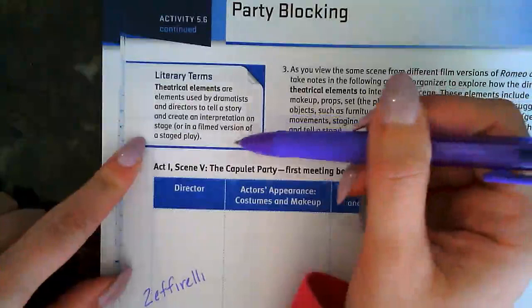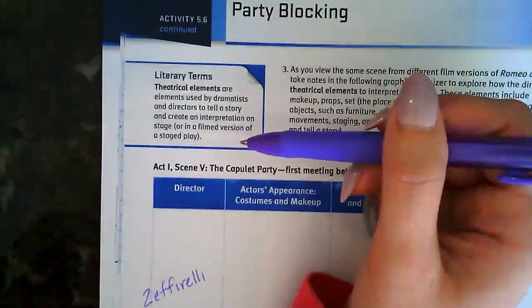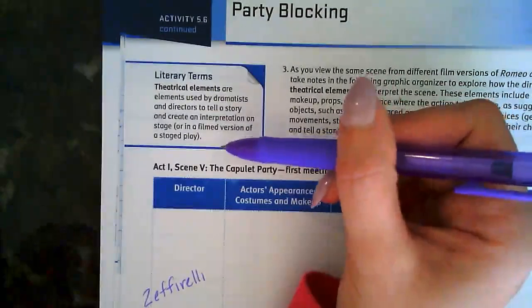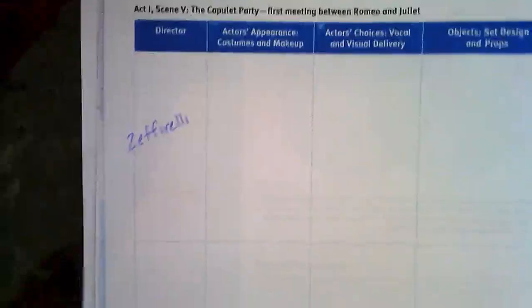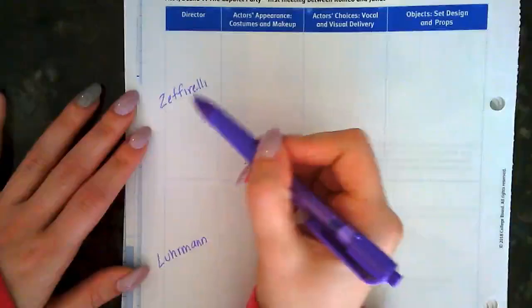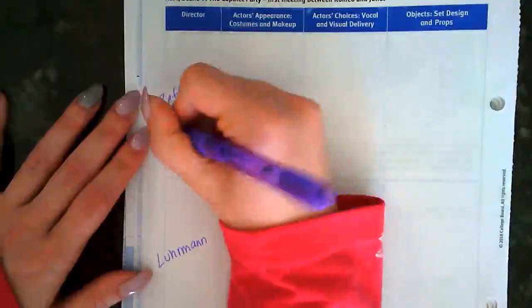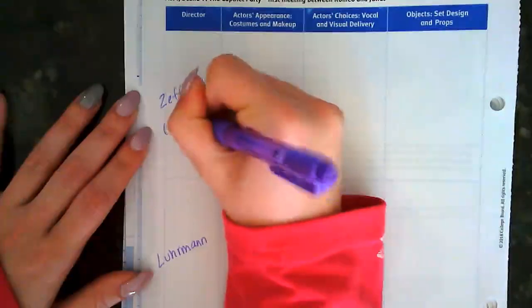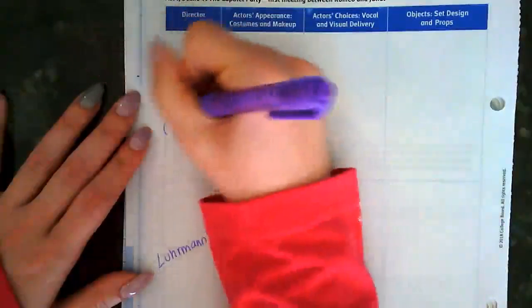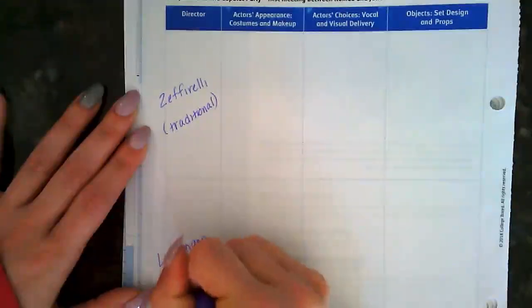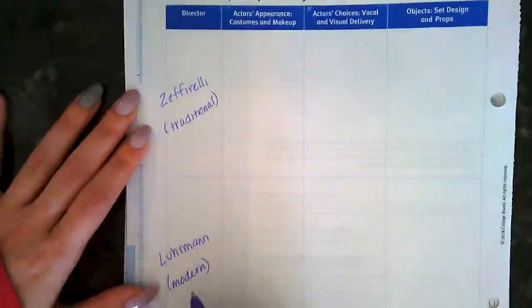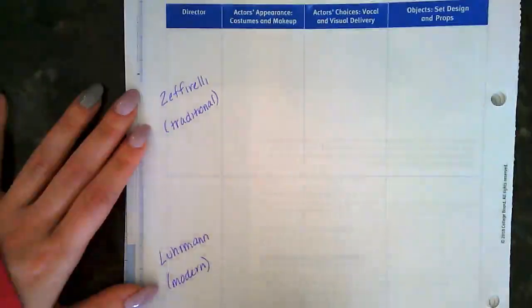The two versions we're going to be examining are the Zeffirelli version, which is the more traditional version, and the Luhrmann version, which is the more modern version. As you watch these film clips, keep both versions in mind.